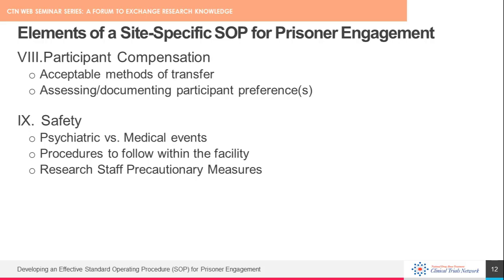Research teams will need to assess how to determine acceptable methods for transferring participant study compensation and how this transfer should be documented. Finally, not to be taken lightly, an element describing safety should be strongly considered for inclusion. Safety information ranges from how to handle psychiatric versus medical events — for example, procedures to follow within the facility — and any relevant research staff precautionary measures, such as whether a buddy system is required for conducting in-person study visits at the facility.